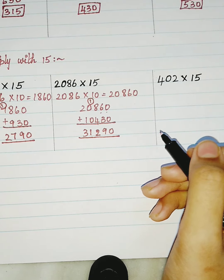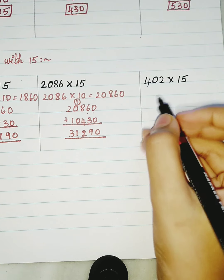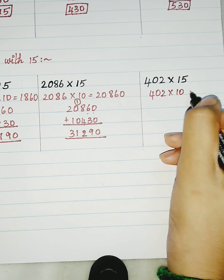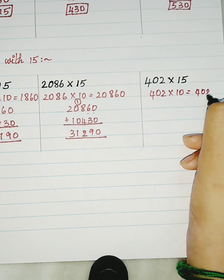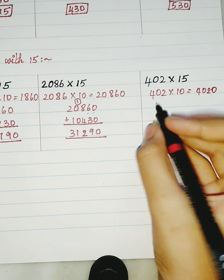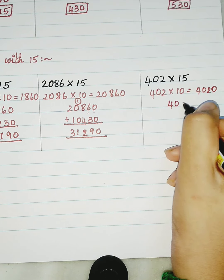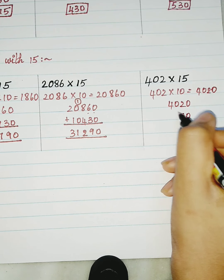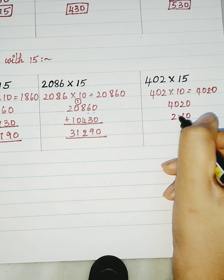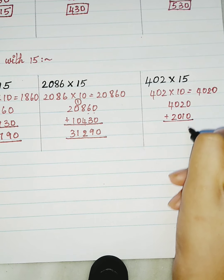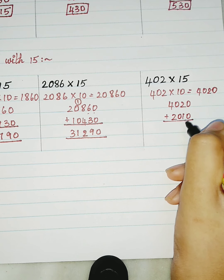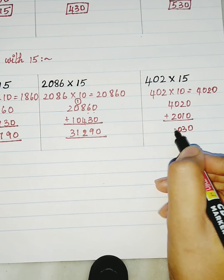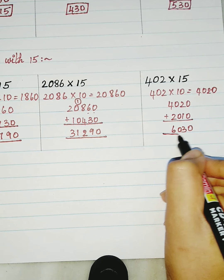The same way for the third one: 402 into 10 is 4020. With the result, make it into half — 20 half is equal to 10, and 40 half is equal to 20. Add both the digits: 0 plus 0 is equal to 0, 2 plus 1 is equal to 3, 0 plus 0 is equal to 0, 4 plus 2 is equal to 6. And 6030 is our answer.